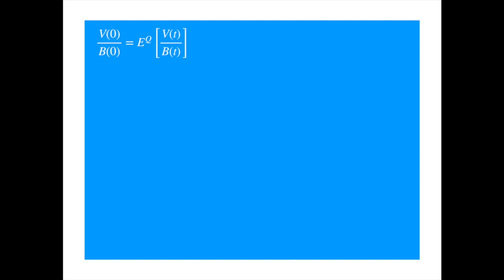We know the risk neutral valuation approach: if you express the value of any asset in units of the bank account, then this process is a martingale under the risk neutral measure. Instead of the bank account as the numeraire, you can use another asset — say the price of a zero coupon. Then the value of any asset expressed in units of the zero coupon will be a martingale, but under a different probability measure. So each numeraire induces a probability measure, and the measure induced by using the capital T maturity zero coupon is called the T forward measure.